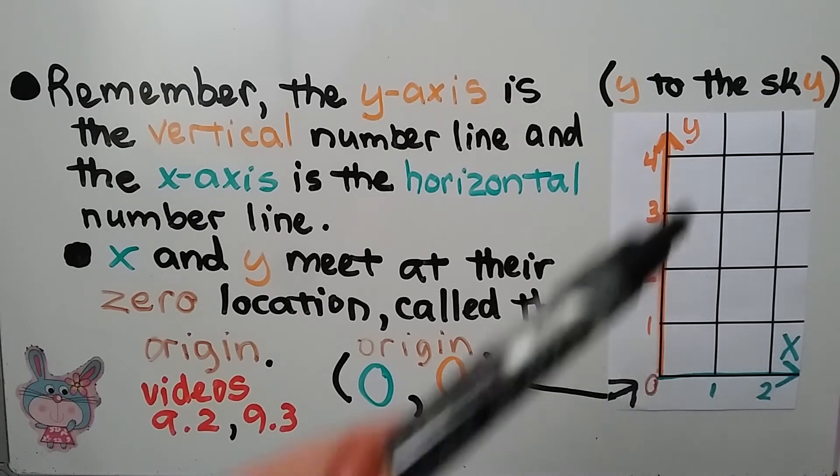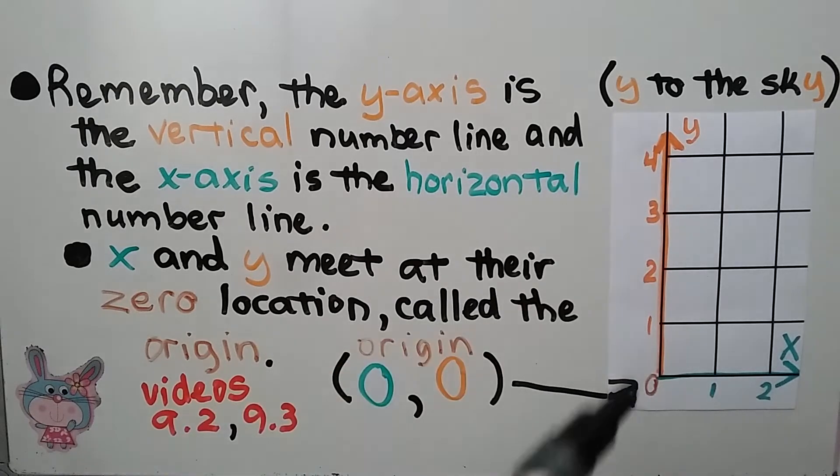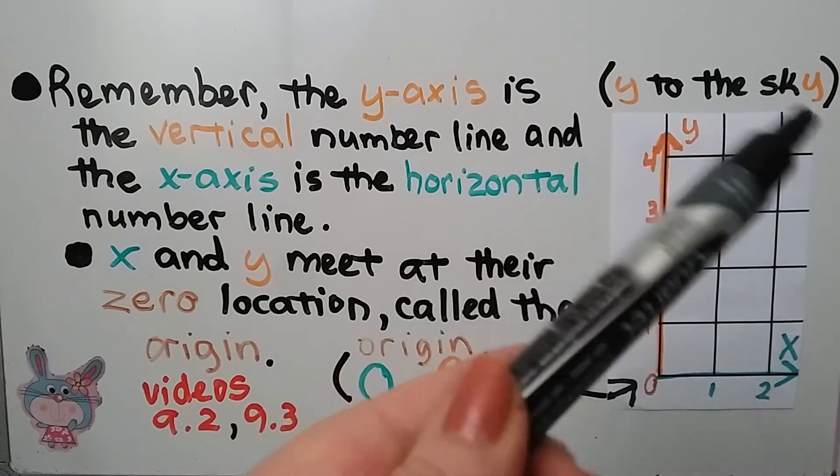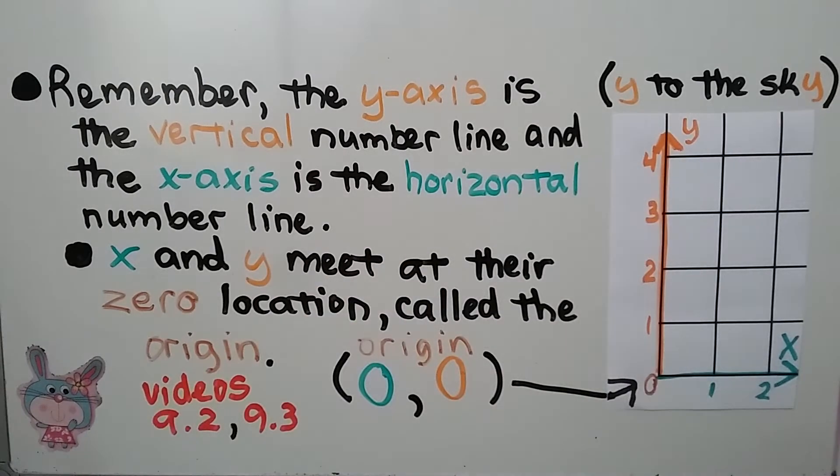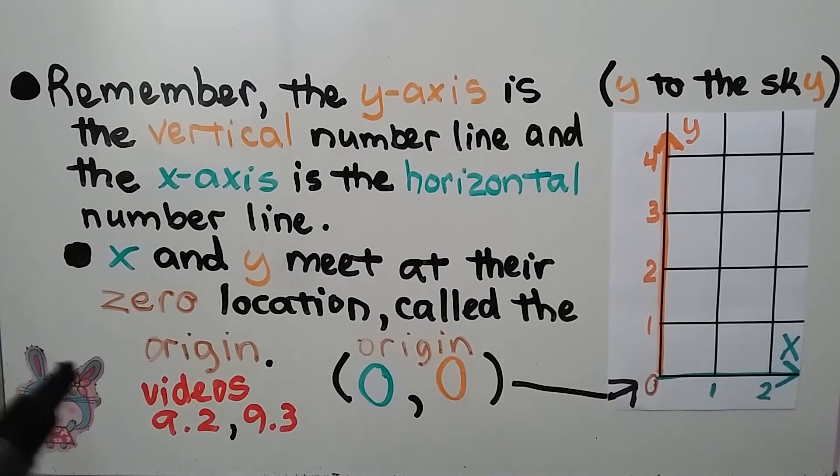Remember that the y number line is the one that goes vertical. We can think y to the sky. It points up to the sky. Now if you missed videos 9.2 and 9.3 where we learned all of this, it's linked in the description for you to click on very quickly and watch.